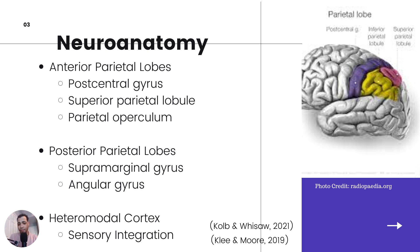The supramarginal gyrus and the angular gyrus are also there — just structures you want to note. A very important point is the heteromodal cortex. These are different areas in the brain — I believe there are two of them and one is located in this area. This is a hub where different sensory modalities are integrated, so you'll have emotions, motor, sensory input, and visual input all come together and are combined for the human experience.